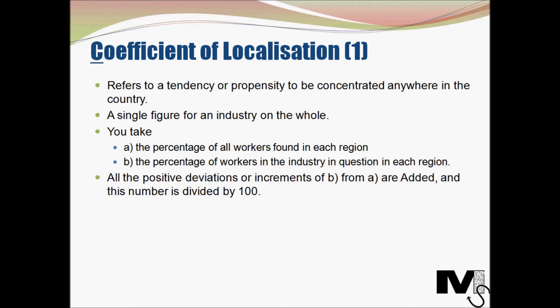To calculate the Coefficient of Localization, you take the percentage of all workers found in each region (A) and the percentage of workers in the industry in question in each region (B). For certain places, B will be higher than A — meaning the percentage of workers in the industry in question in a region is actually higher than the overall percentage of workers found in that region. All of these positive deviations from B to A are then added together, and this number is divided by 100 to give an overall figure.